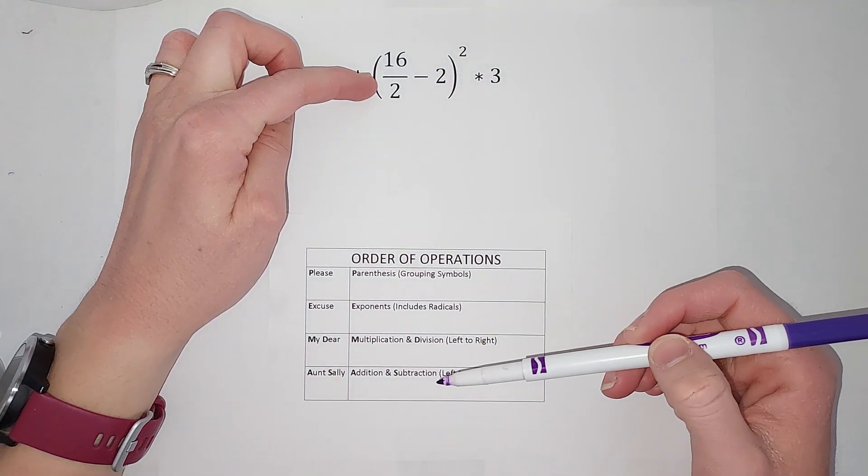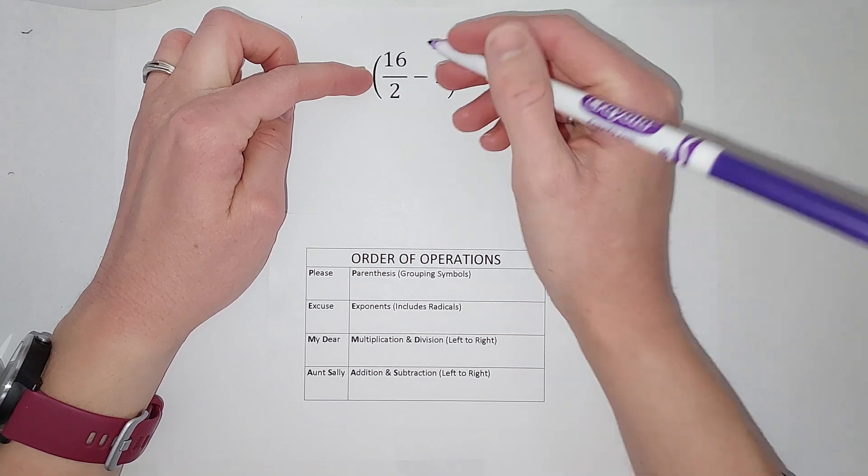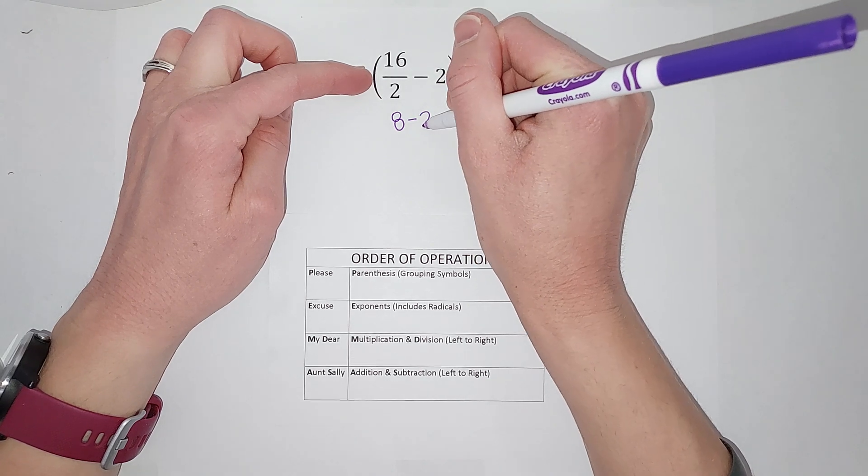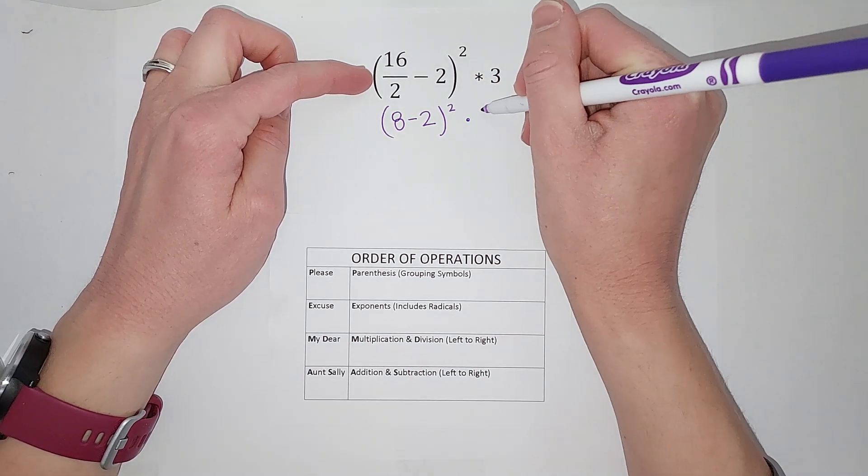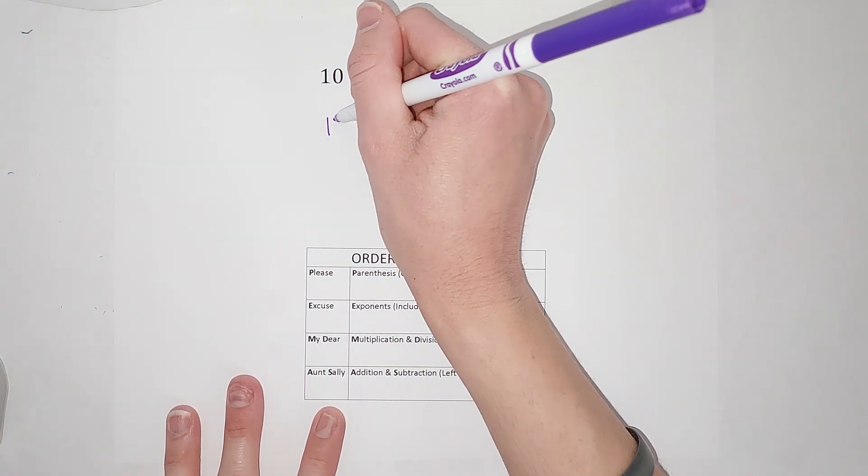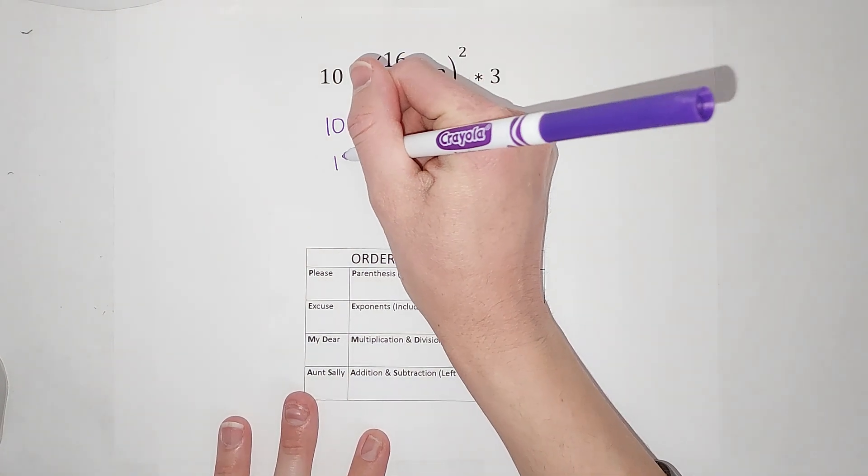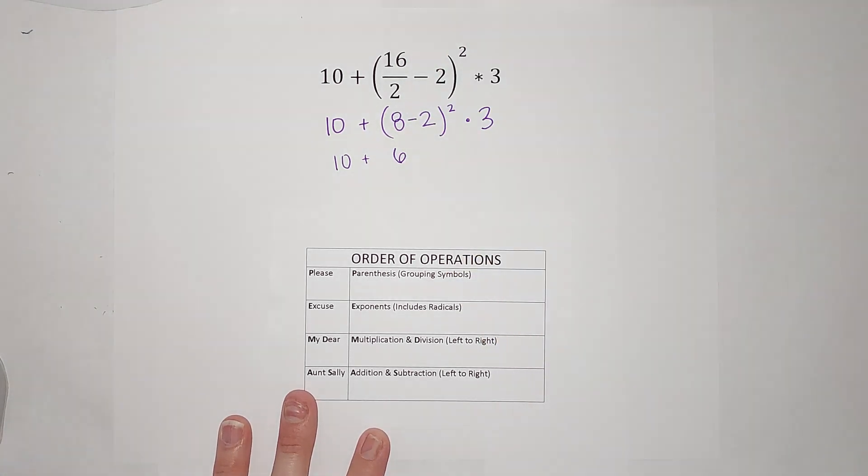16 divided by 2 gives me 8. Next, I still have parentheses, so I'm going to do that 8 minus 2 next. 8 minus 2 gives me 6. So I'm going to have 10 plus 6. Now that I've done everything inside of there, I can drop the parentheses. I have that squared times 3.